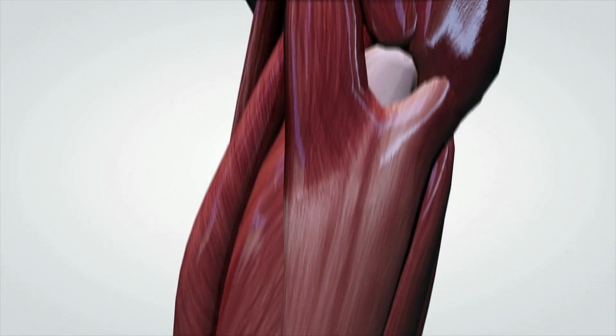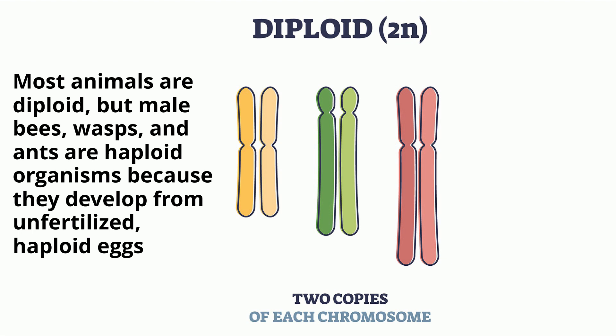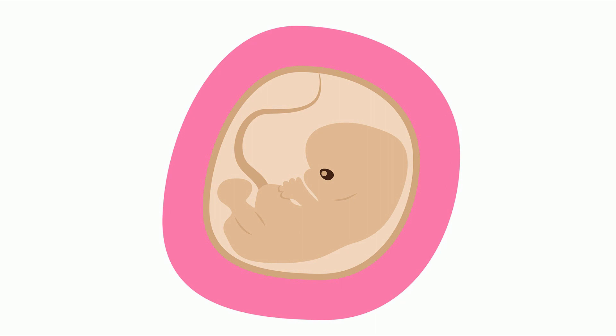Animals are diploid, meaning each cell has a homologous pair of chromosomes. This means that they have two sets of chromosomes — one from mom and another from dad. And animals develop from an embryo.